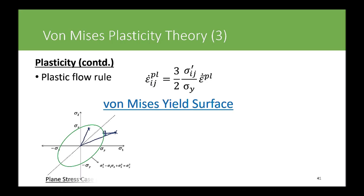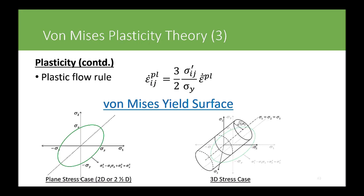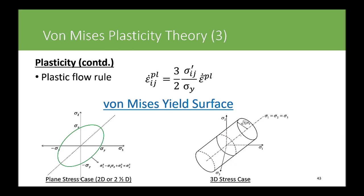In 3D stress space, the yield surface becomes a cylinder. Anything inside the cylinder is elastic; anything outside is plastic and requires updating the plastic strains using the normality rule — returning the stress radially back to the yield surface. With no hardening, the yield surface is constant. In the next part, with isotropic hardening, the yield surface will start to grow and must be accounted for in the return mapping algorithm.